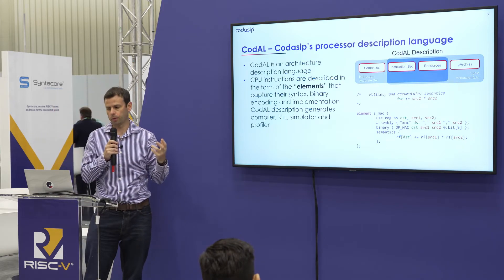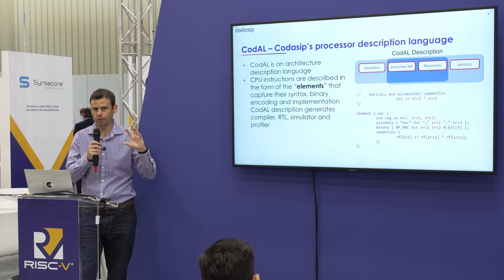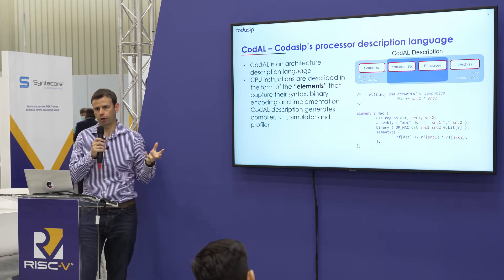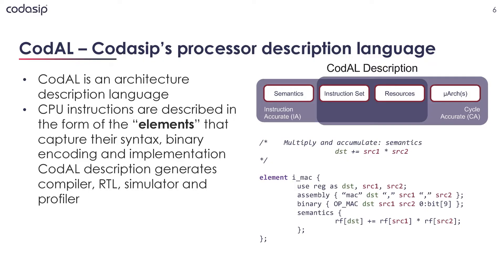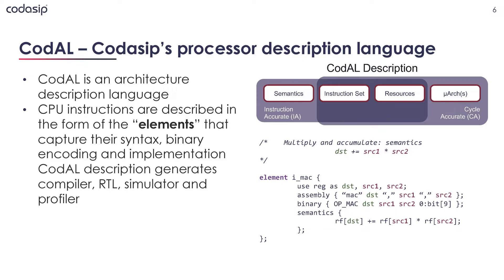Codasip's unique proposition is our Codal processor description language — it's an architecture description language, not a generic HDL. You can very quickly describe all of the elements needed to build processors. The focus is on efficiency around things like instruction decoders and architectural elements like register files. We model at two levels: an instruction-accurate level (the programmer's view) used to generate both an instruction-accurate simulator and your SDK and toolchain, including a full C++ compiler based on LLVM, a debugger, and simulator. On the implementation side, a microarchitectural description includes your full pipeline, where you handle things like forwarding, data hazarding, and all fine-grained control needed when building a processor.